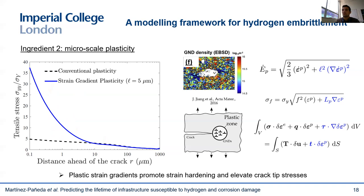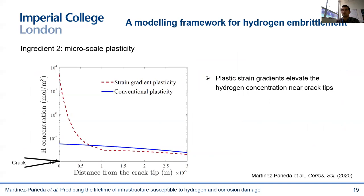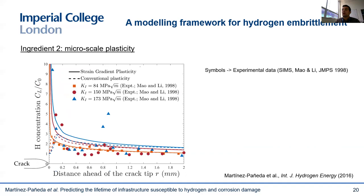When you use strain gradient plasticity models to plot hydrogen concentration ahead of the crack tip, you see a much higher hydrogen content than when using conventional models — a result of the elevation of the hydrostatic stress. We have compared predictions with experimental measurements of hydrogen content ahead of the crack. Despite some scatter, we see good agreement, and only by accounting for GNDs and strain gradient effects can we capture two trends seen in the experiments: the hydrogen content increases as we approach the crack tip, and it increases as we increase the remote load. So we are relatively confident that we are properly characterizing the chemo-mechanical problem.